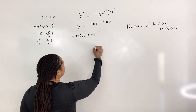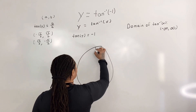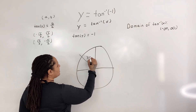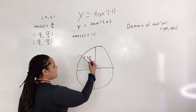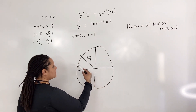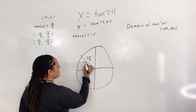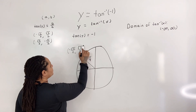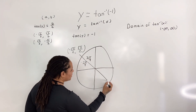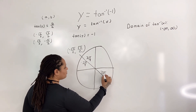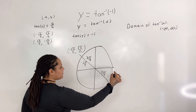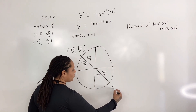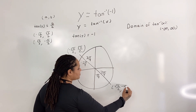Let us draw our unit circle. In the second quadrant, the location is at 3π over 4, going in the positive direction. Going in the negative direction gives negative 5π over 4. The coordinates there are (negative root 2 over 2, root 2 over 2). Similarly, in the fourth quadrant, we have 7π over 4 going in the positive direction, and negative π over 4 going in the negative direction. The coordinates there are (root 2 over 2, negative root 2 over 2).